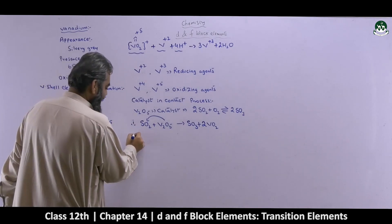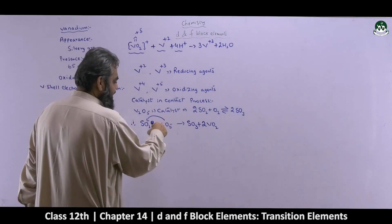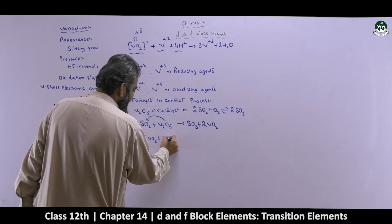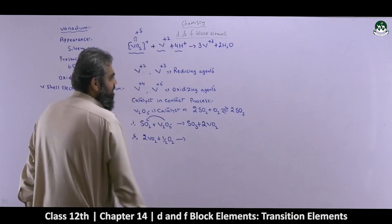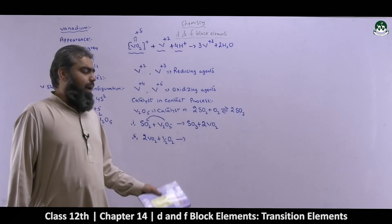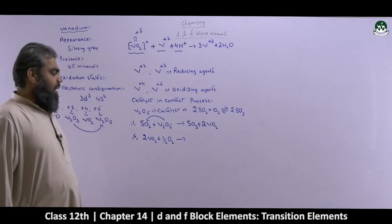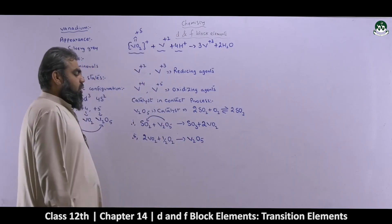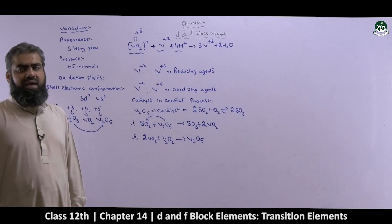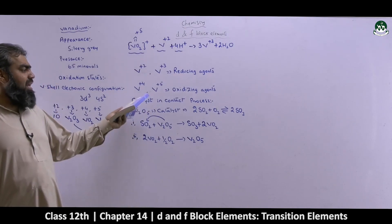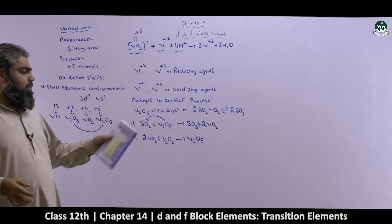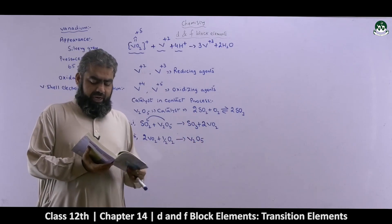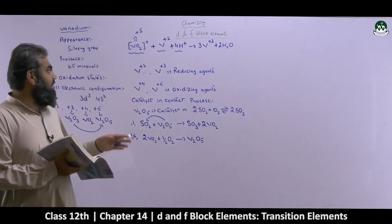In step number two, to regenerate Vanadium pentoxide, these two molecules of VO2 are combined with half a molecule of oxygen — meaning one oxygen atom. When you combine it, it produces a molecule of V2O5 — Vanadium pentoxide is regenerated. So this is the mechanism by which Vanadium pentoxide catalyzes the contact process, and the process is complete.